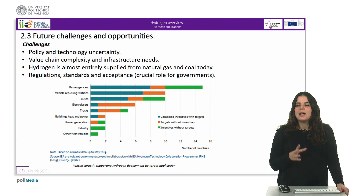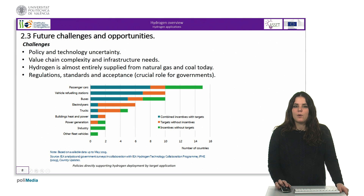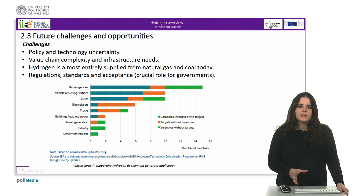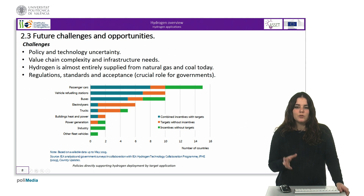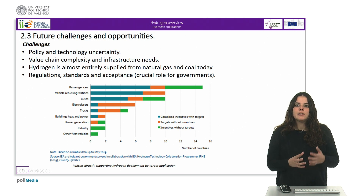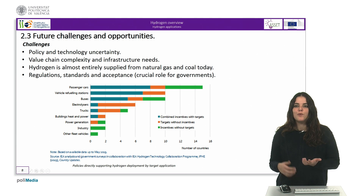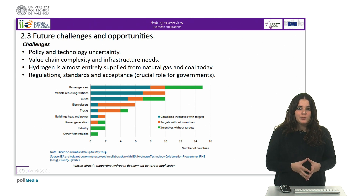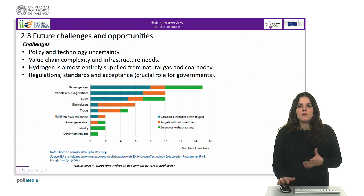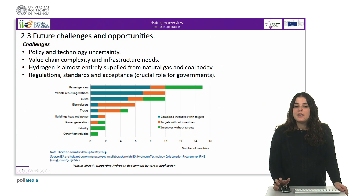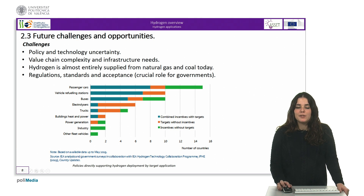In addition, nowadays Hydrogen is almost entirely supplied from natural gas and coal, which are responsible for annual CO2 emissions equivalent to those of Indonesia and the United Kingdom together. An energy future based on Hydrogen requires both the capture of CO2 from Hydrogen production from fossil fuels and greater supplies of Hydrogen from clean electricity. Finally, regulation currently limits the development of a clean Hydrogen economy, and government and industry must work together to ensure existing regulations are not an unnecessary barrier to investment.